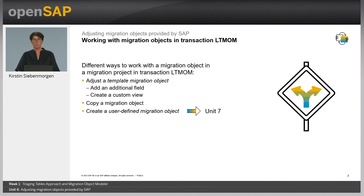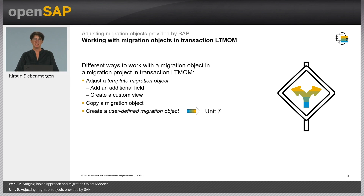There are different ways to work with the Migration Object in your Migration Project when you use the Migration Object Modeler. The first possibility is to adjust a template Migration Object to your needs, for example, create a custom view or add an additional field. The second way is to copy a Migration Object and adapt it to your needs. If you have specific requirements not covered by the Migration Objects delivered by SAP, or if you have customer objects which you want to transfer to the SAP S/4HANA system, you can create your own objects. I will show you this third option in detail in Unit 7.